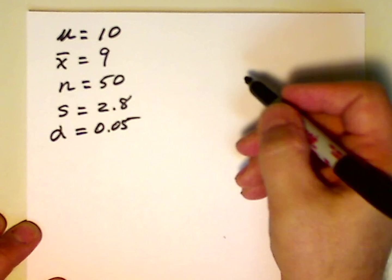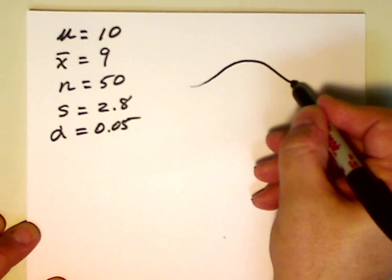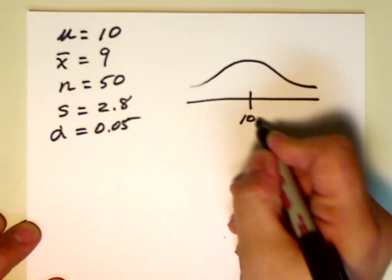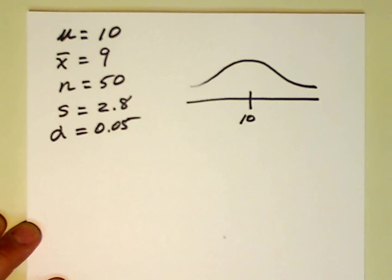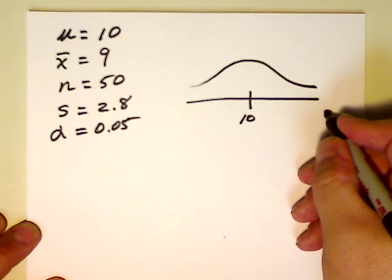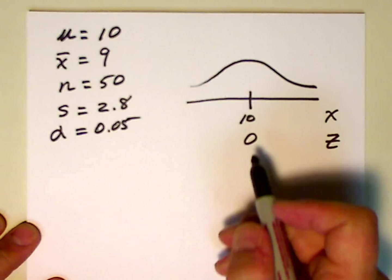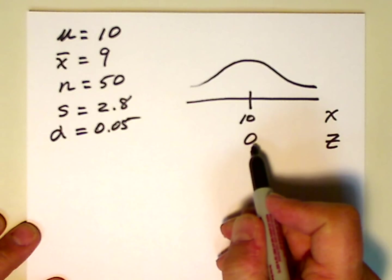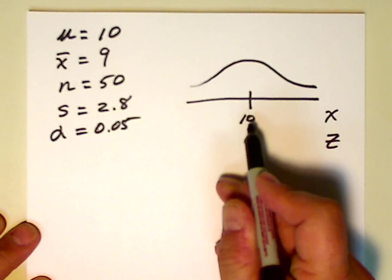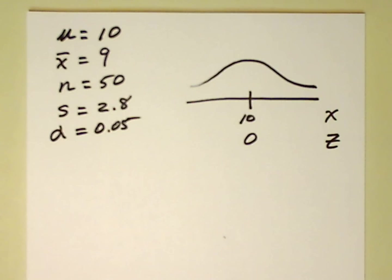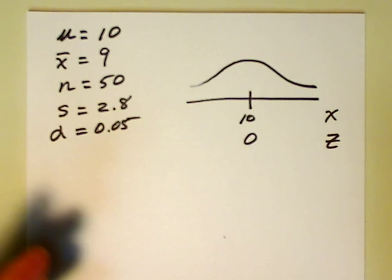We then want to draw the picture, so let's draw the normal curve. We know that 10 is the mean, the x-bar mean, and we know that in the standard normal distribution — which has a mean of 0 and a standard deviation of 1 — the z-value associated with 10 is 0. Now comes the hard part for most students: is this a one-tail test or a two-tail test? And if it's a one-tail test, which tail are we working with?